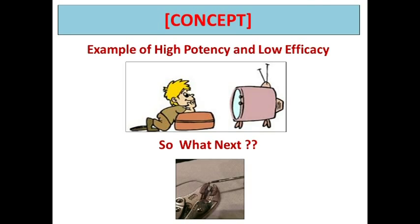What can be done is to stop the signals coming to the television — cut off the cable line so that no signal reaches the television. That way you can divert his attention to more useful things in life and not waste his talent just watching television. This concept can be utilized to understand the combination of imipenem plus cilastatin.